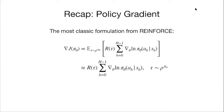Let's recall the most classic formulation derived from the algorithm called REINFORCE. We can write the gradient of the objective function with respect to the parameters of our policy theta. The expectation is taken with respect to the trajectory sampled from your current policy, weighted by the total reward along that trajectory, summed with the gradient of the log likelihood of your policy. So you're essentially updating the parameters of your policy such that the resulting trajectory distribution puts more probability mass on trajectories that have high total reward.